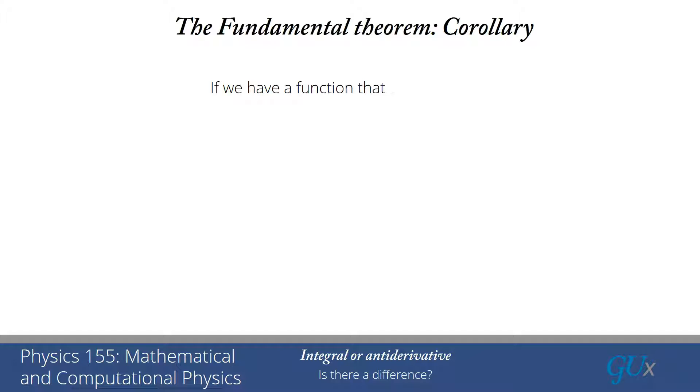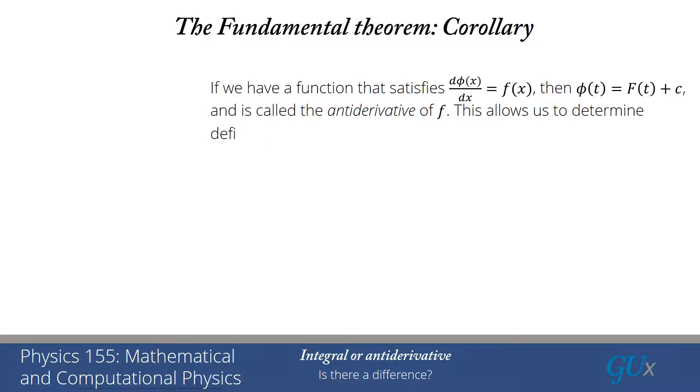Okay, there's a corollary to this theorem which says if we have a function that satisfies dφ(x)/dx equals f(x), then φ(t) will equal F(t) plus some constant. And that is called the antiderivative of f.